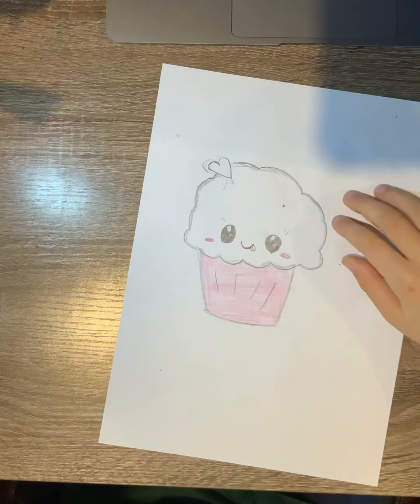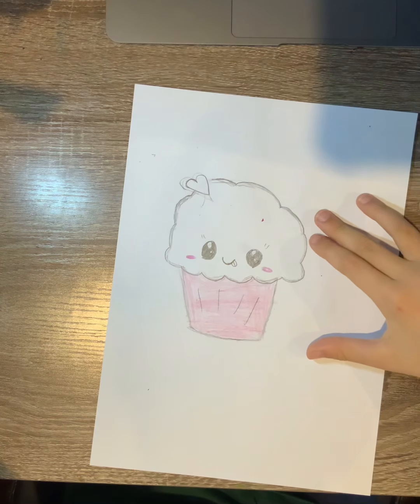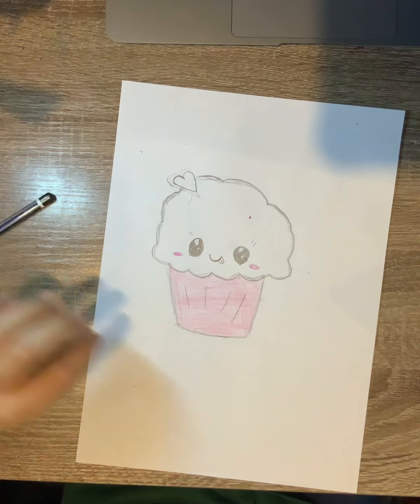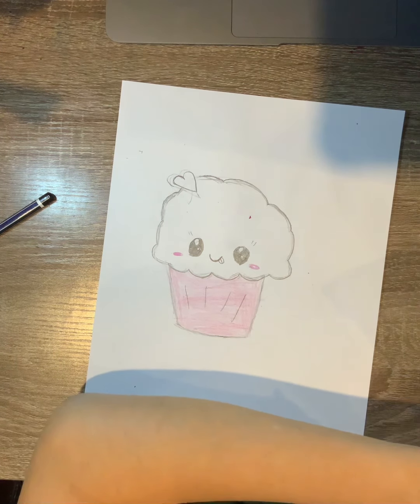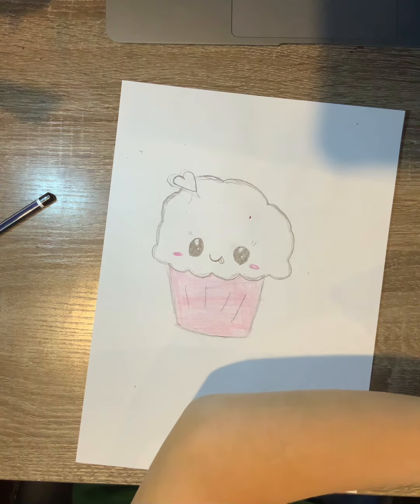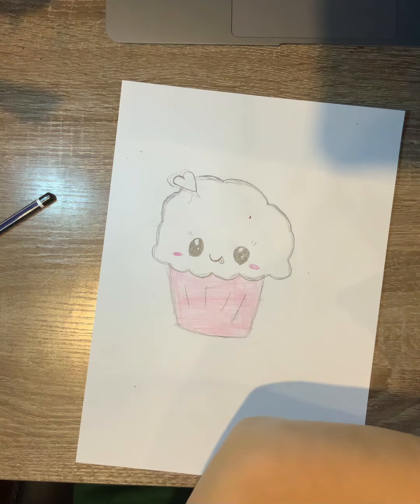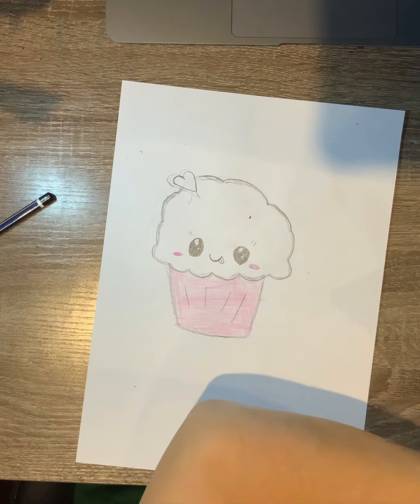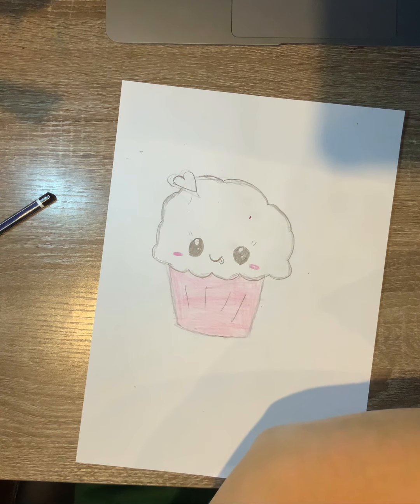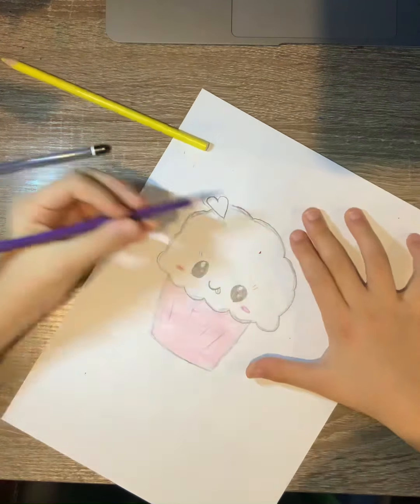Now we want to do our sprinkles, so red and purple and yellow. Just choose your own colors - I also want to do green and blue, so let's draw some sprinkles.